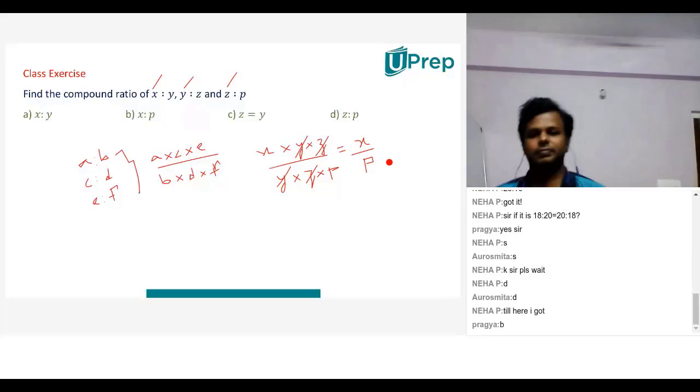So this is the answer. The answer is Option B. X is to P. Children are we okay here?